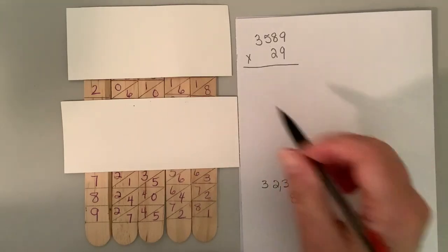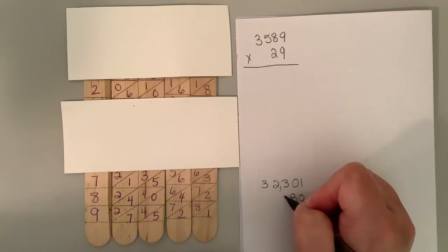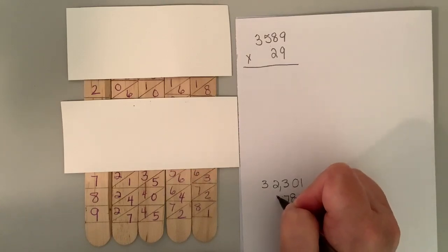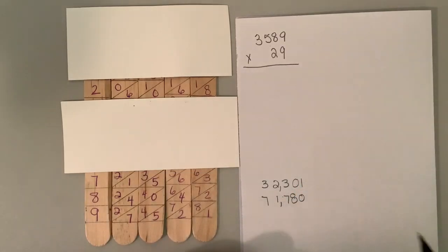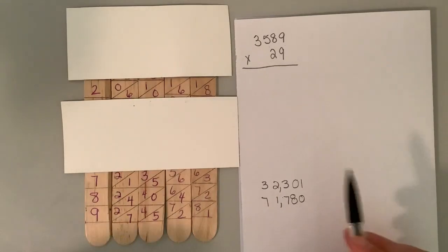So in the tens place, I have eight, six plus one is seven, one plus zero is one and six plus one is seven. So, 3589 times 20 is 71,780.